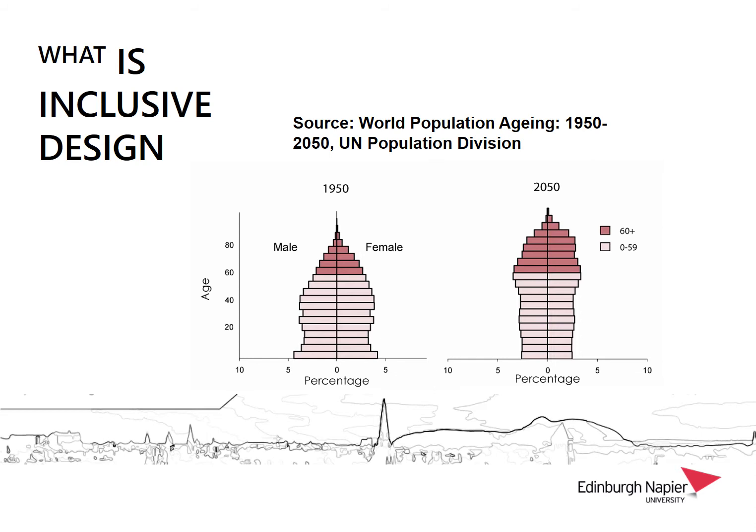There are major demographic changes taking place in the world today and the main issue of concern for inclusion is that the population around the world is ageing. If you look at this graph showing the proportion of people at different ages and percentages, you'll see that in 1950 the bias was towards the younger and middle age groups, and in 2050 the prediction is that the middle and younger age groups will be the lesser proportion of the population, while the older age groups — 59 and 60 plus — will be the larger groups. In some countries, such as Japan, this has already happened.